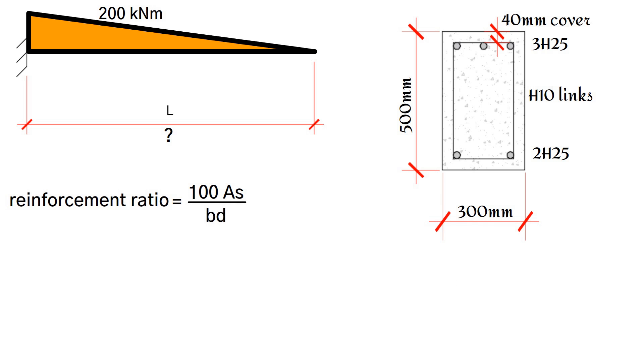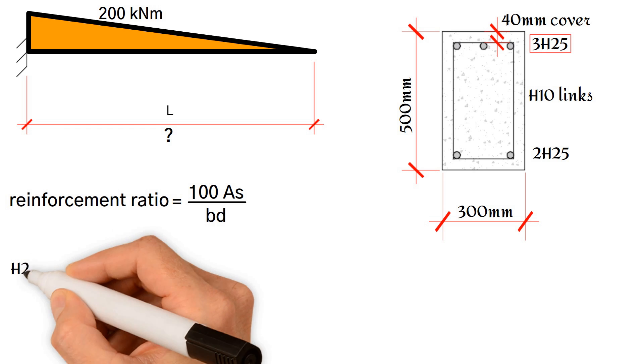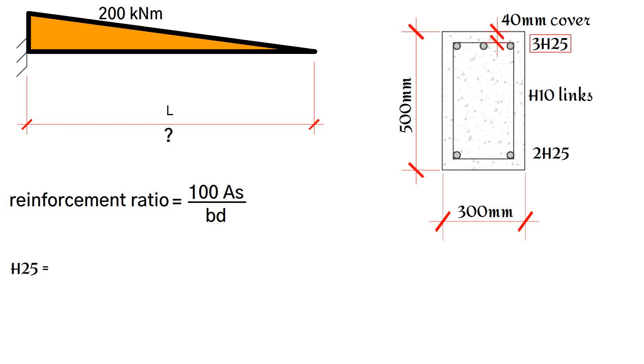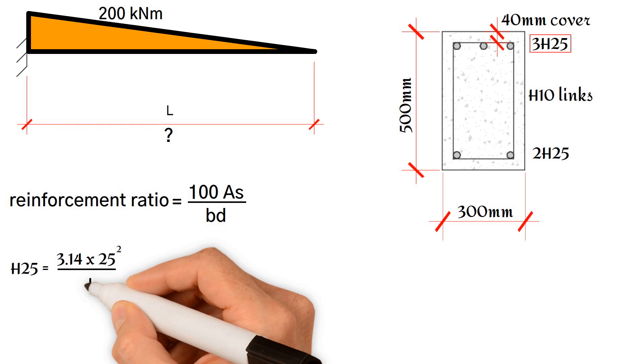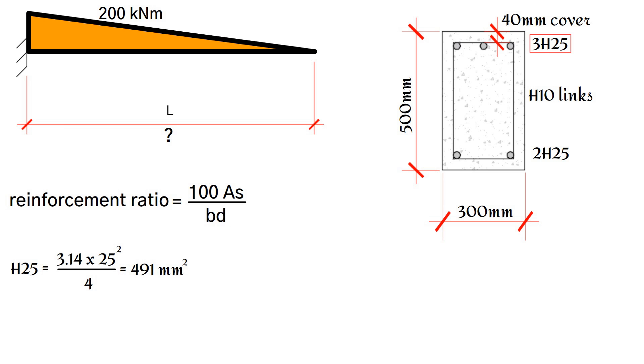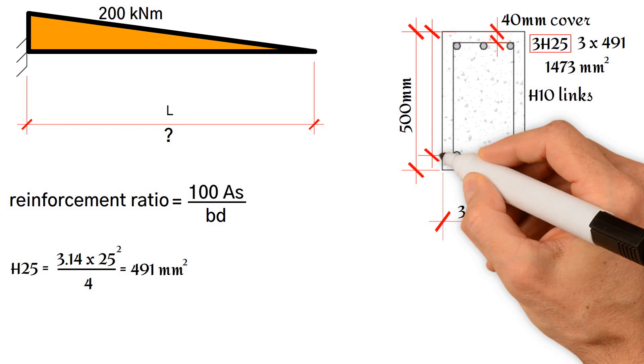At the top, we have three 25mm steel bars. The area of a 25mm steel bar is equal to π times 25 squared divided by 4, which equals 491mm². As a result, the total area provided is 3 bars multiplied by 491. This is equal to 1473mm².